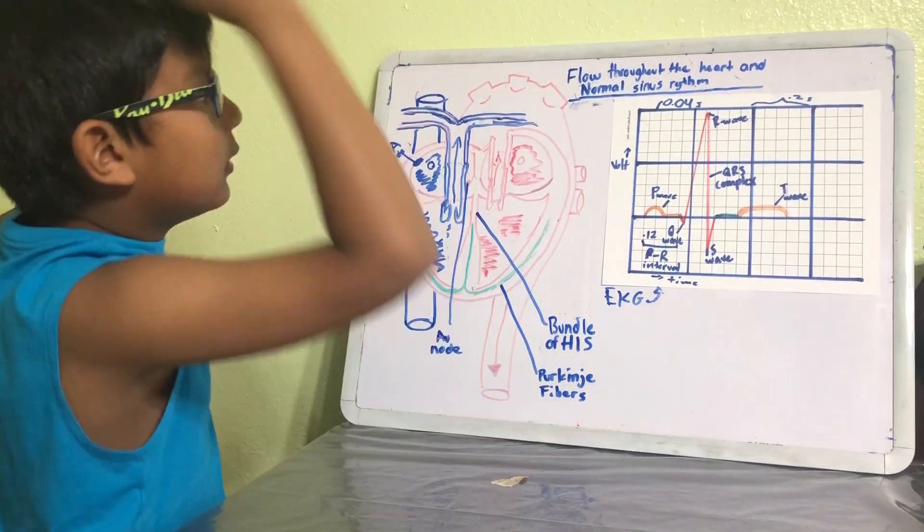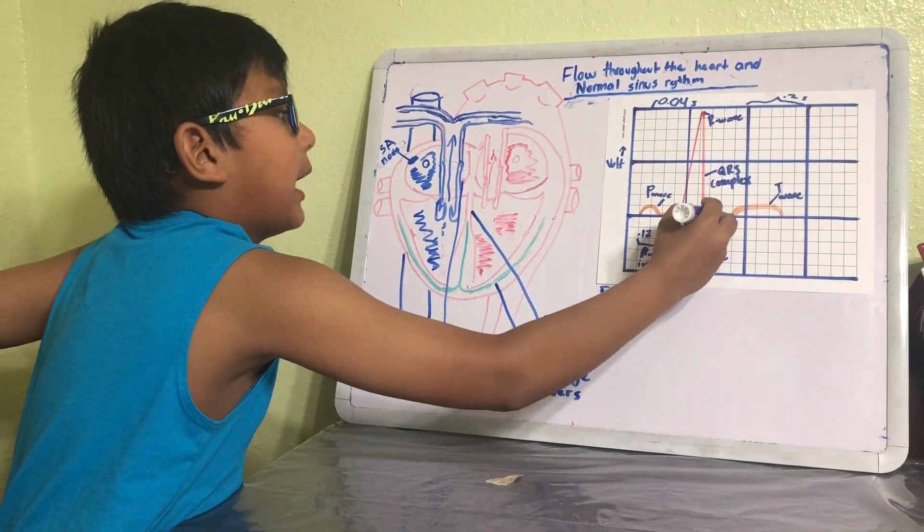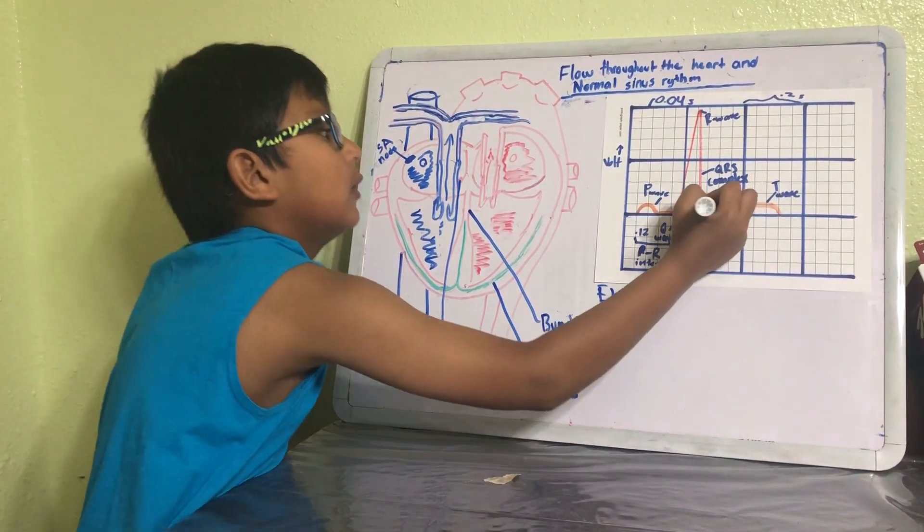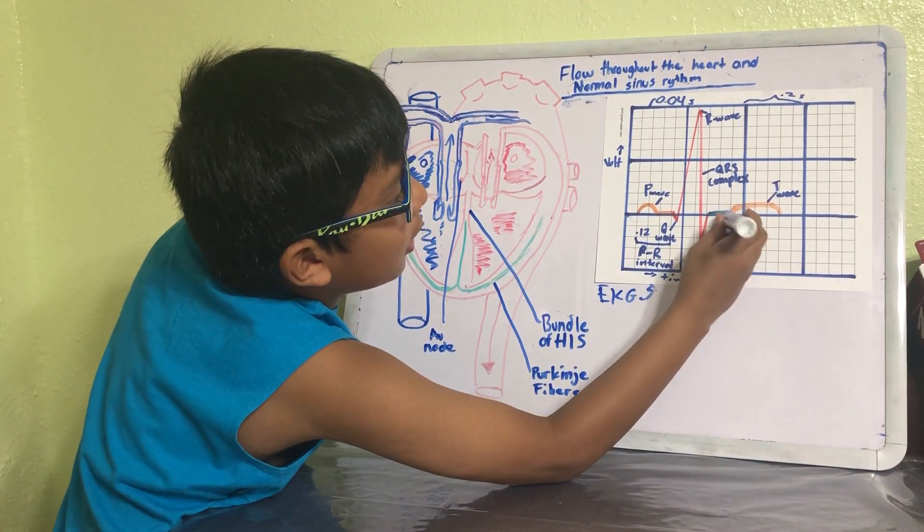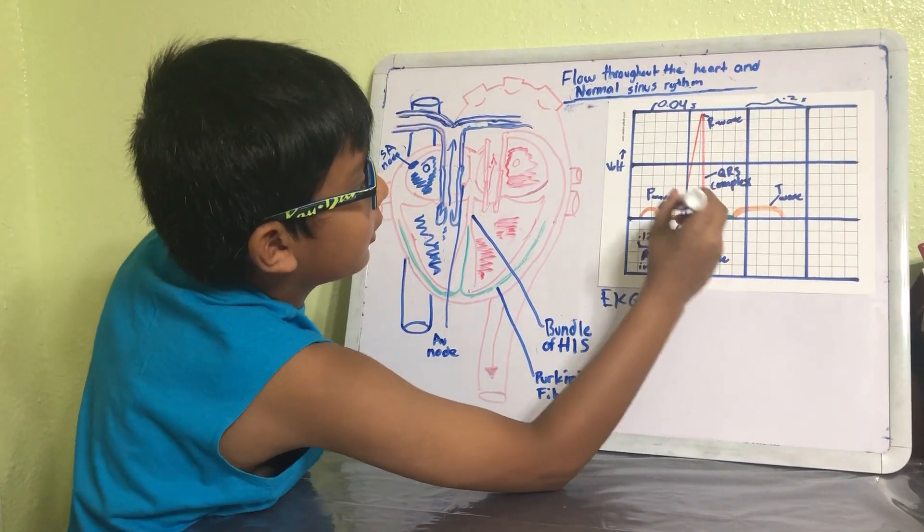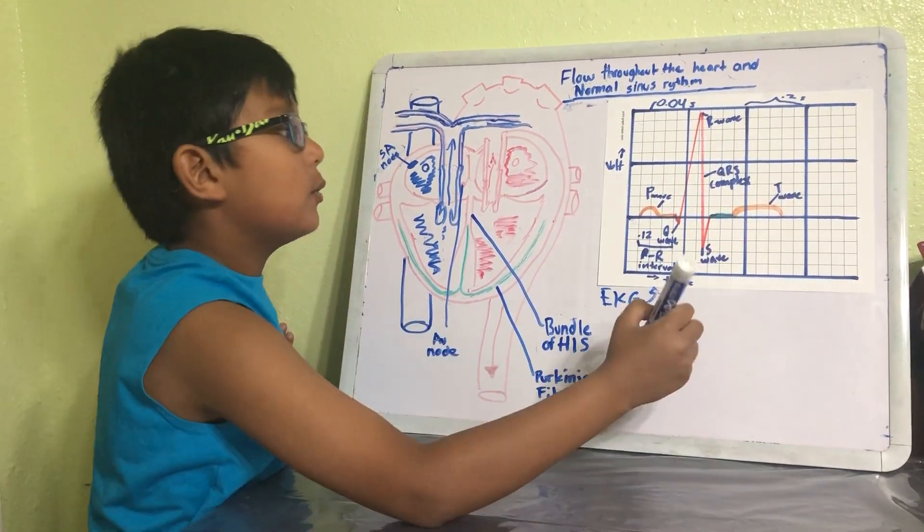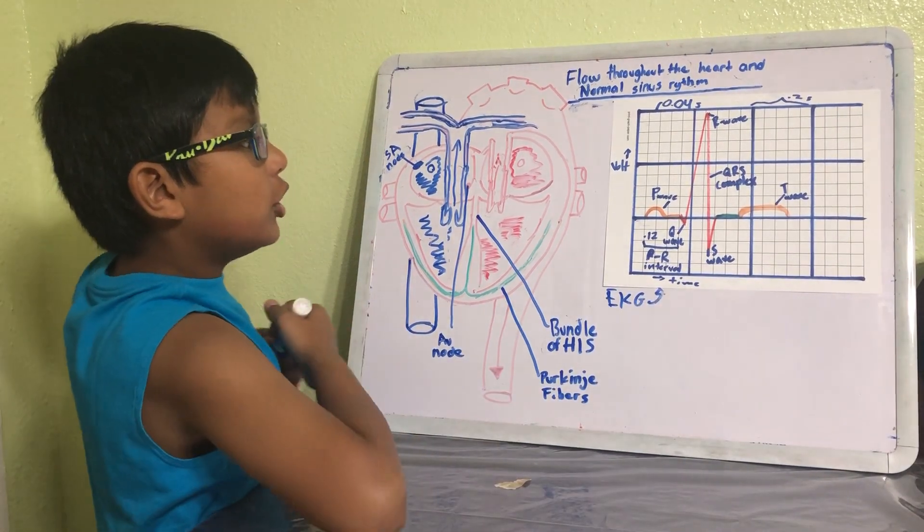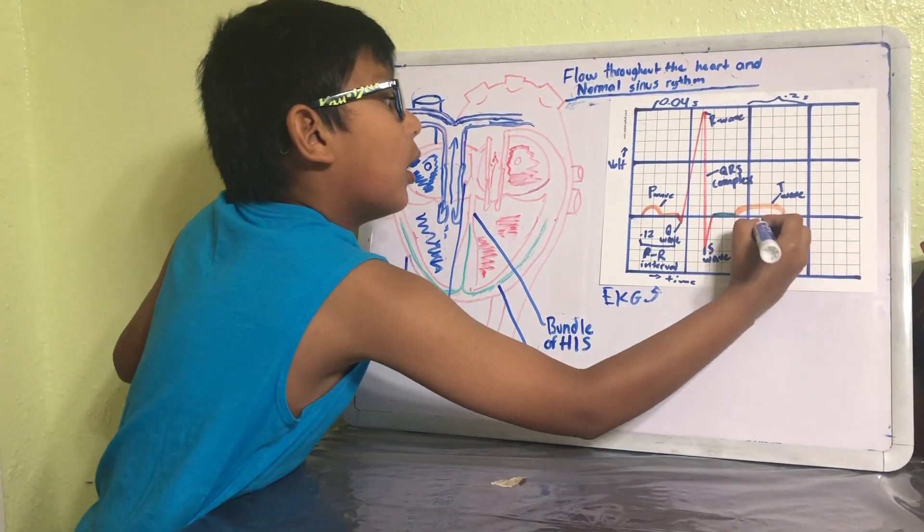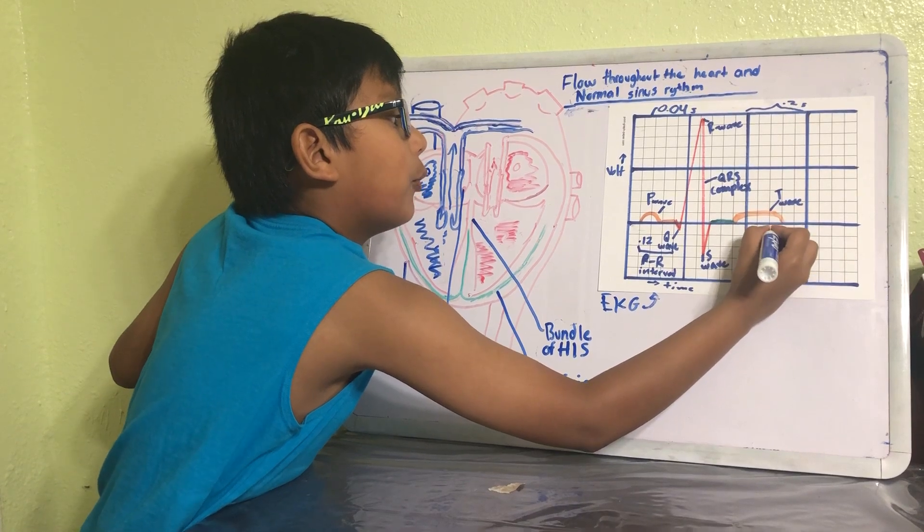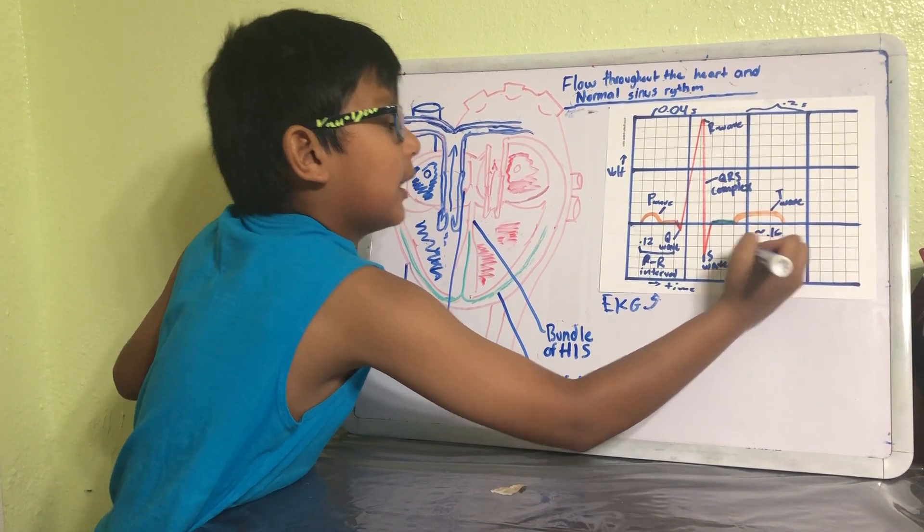And then we go on a 0.08 second break. Then this is the T wave, and it should usually last about 0.16 seconds.